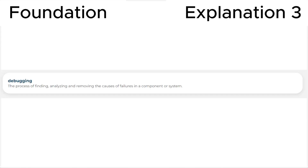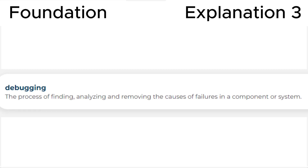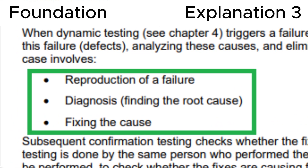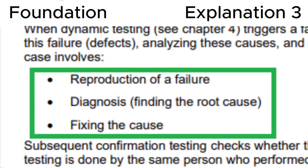Explanation. Let's look at the definition of debugging in the ISTQB Glossary. We can see a clear sequence of actions here: finding, analyzing, removing the causes of failures in a component or system. But a more accurate hint matching the correct answer is in the ISTQB Syllabus: reproduction of a failure, diagnosis, finding the root cause, fixing the cause.